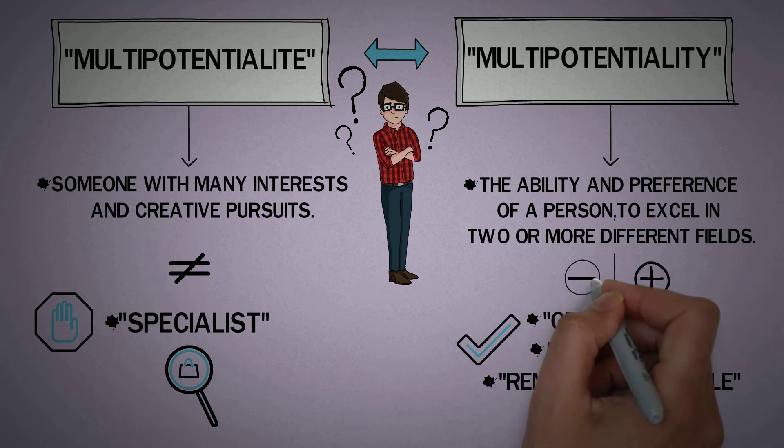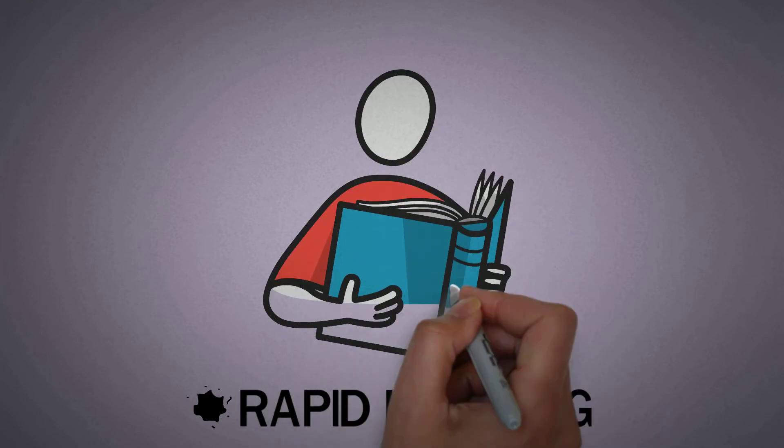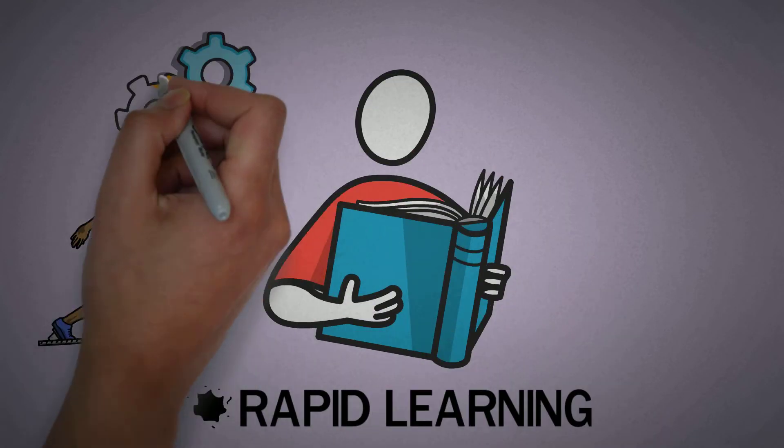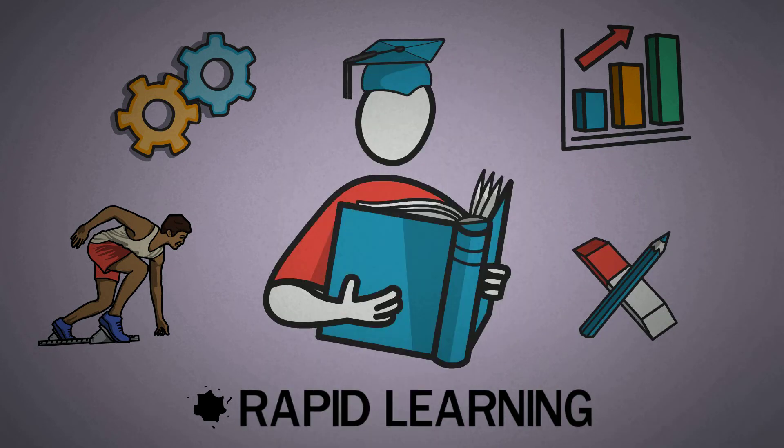But let's explore some of the advantages and disadvantages of this group of people. First, multipotentialites are rapid learners. And that's because they have been beginners so many times in the past. Learning is a skill and they are masters at it.